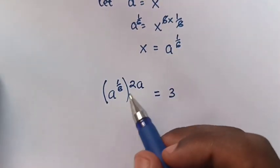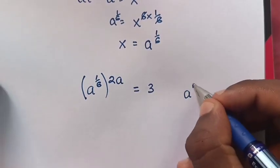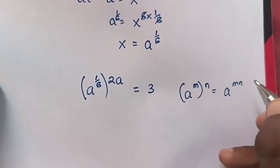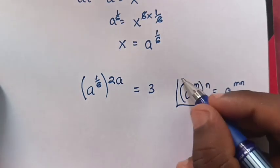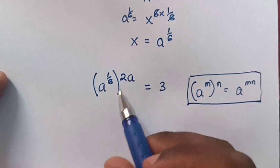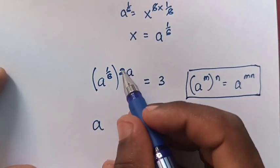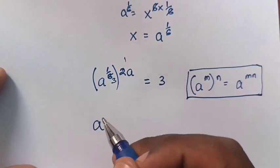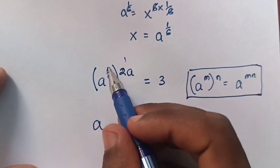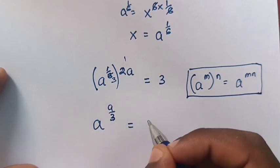Then, from here, we will apply the exponential rule that a power of m, bracket power of n, is equals to a power of m times n. So, here, x power of 1 over 6 — we will multiply these powers. So, it will be a power of a over 3. It is equals to 3.